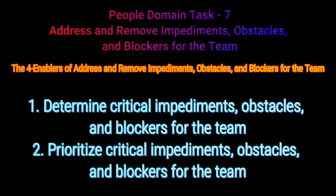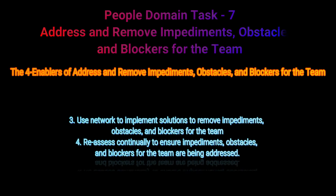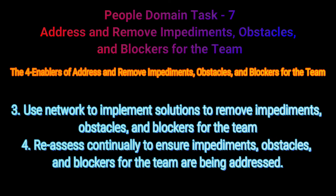The second enabler is to prioritize critical impediments, obstacles, and blockers for the team. Third, use a network to implement solutions to remove impediments, obstacles, and blockers for the team. Fourth, reassess continually to ensure impediments, obstacles, and blockers for the team are being addressed.